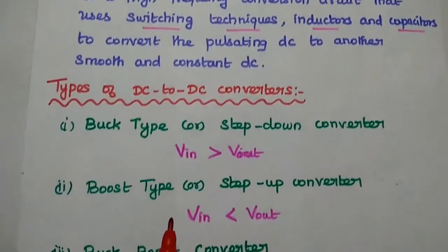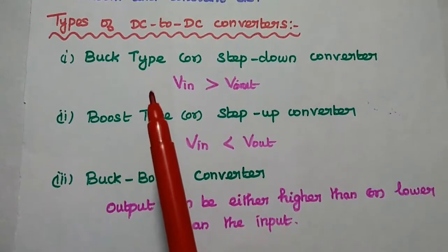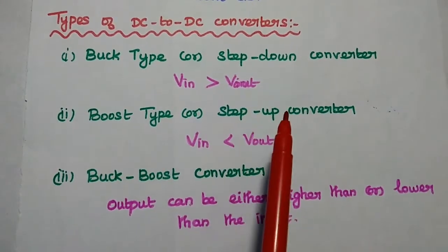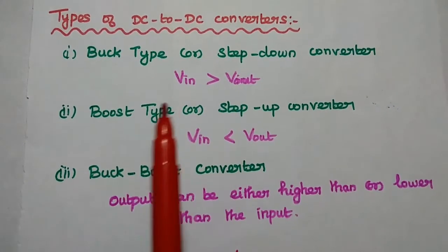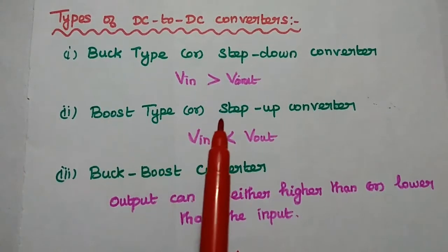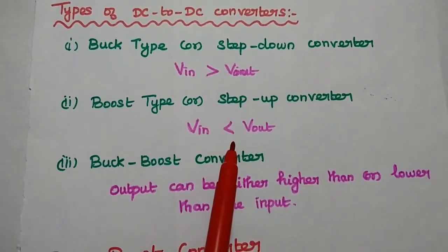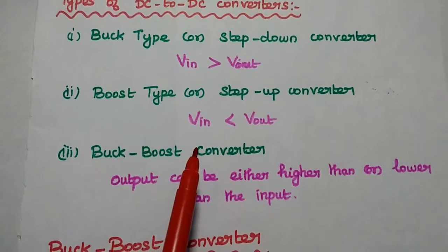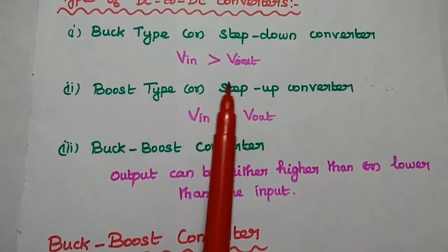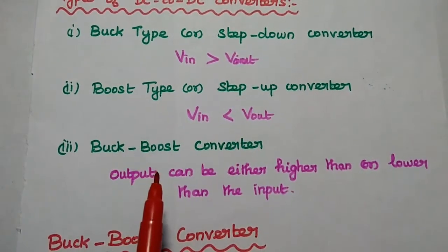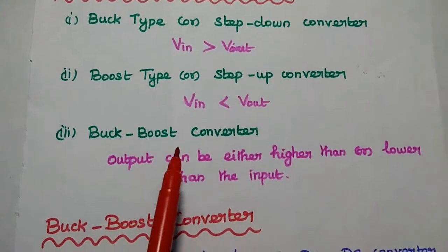There are three types of DC to DC converters available. The first one is the buck type, also known as the step-down converter, in which the output voltage is less than the input voltage. The next one is the boost type, also known as the step-up converter, in which the output voltage is always greater than the input voltage. The third one is the buck-boost converter, which is a combination of step-down and step-up converter — meaning the output can be either greater than or less than the input voltage.